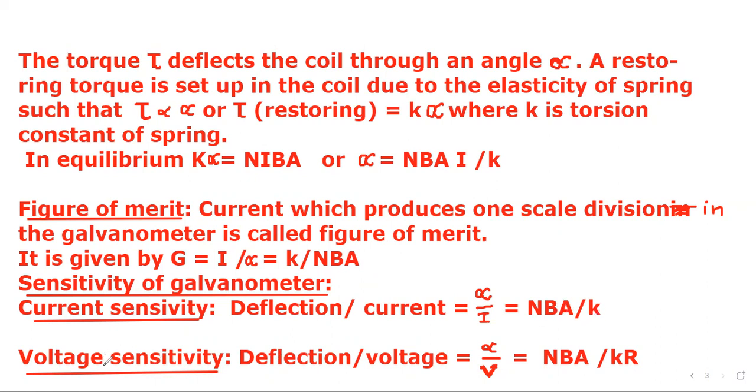Then we define voltage sensitivity, which is defined as deflection per unit voltage. Here in current sensitivity, if we divide by R, so IR becomes V, so we get alpha upon V, which is NBA upon kR. Thank you for watching.